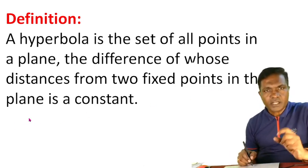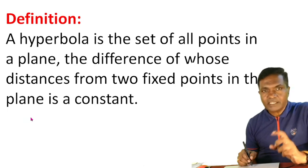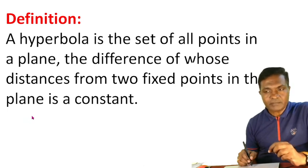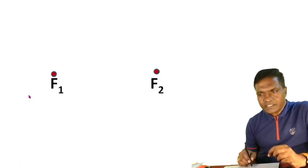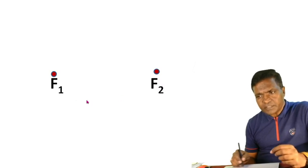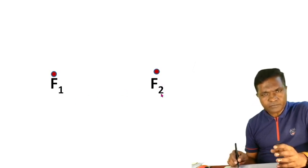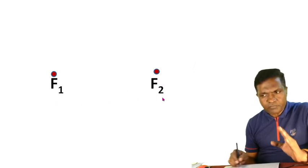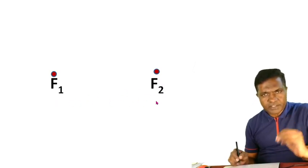Diagrammatically, we will discuss the difference of the points from two fixed points F1 and F2. So, F1 and F2 are the two fixed points we will discuss.